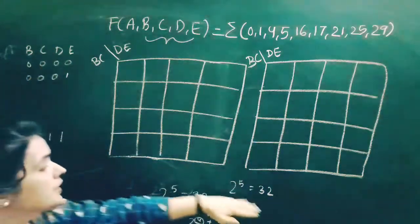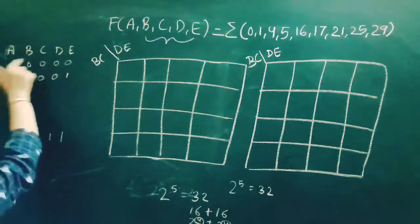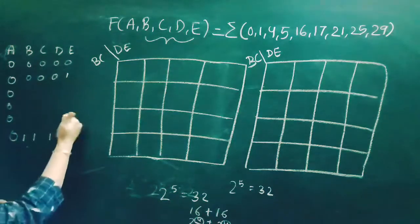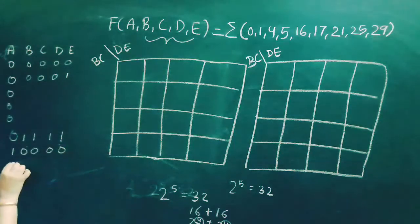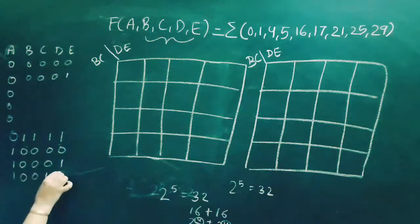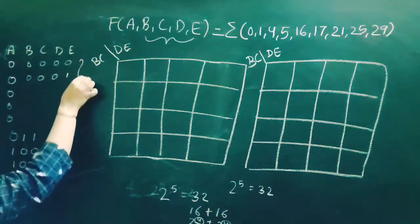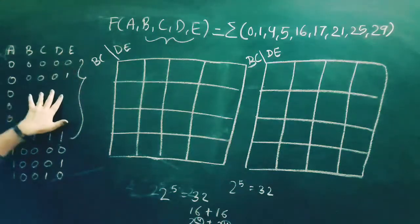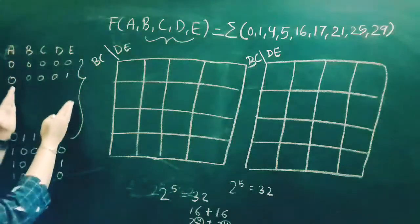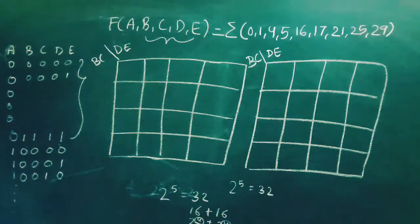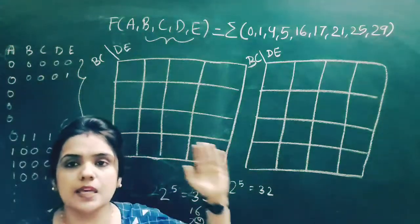What will these 32 values be? If we add variable a, the values will start with a=0 giving combinations from 0,0,0,0,0 up to 0,1,1,1,1, and then with a=1 we have 1,0,0,0,0 through 1,1,1,1,1. This 4-variable combination of b,c,d,e is repeated once for a=0 and again for a=1, giving 32 total possible values of 5 variables a, b, c, d, e.